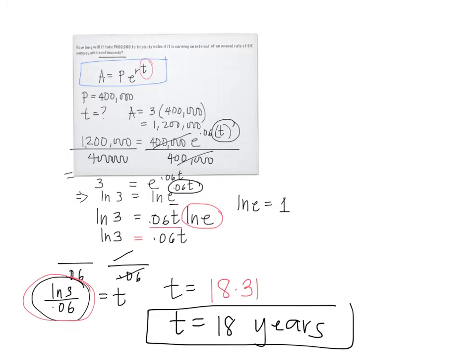Some important notes in approaching this problem: our keyword was continuously. This gave us the idea that the formula to be used is A equals P e to the rt. There's a different formula to be used for other compound interest problems that are not compounded continuously.